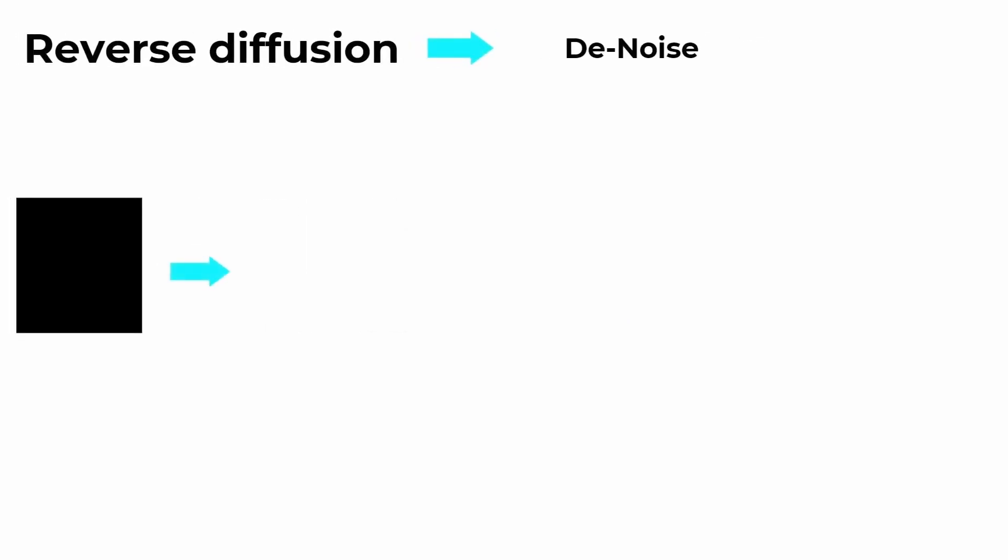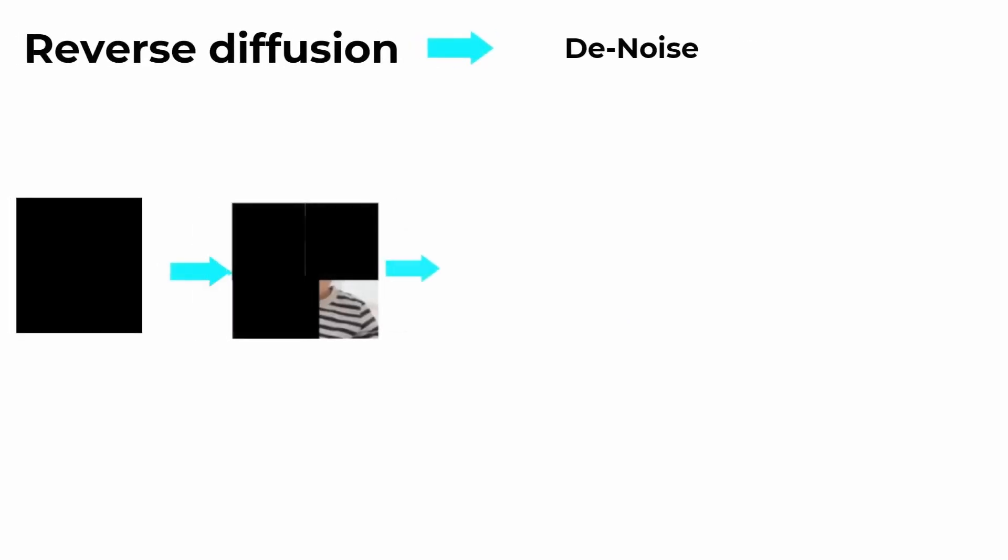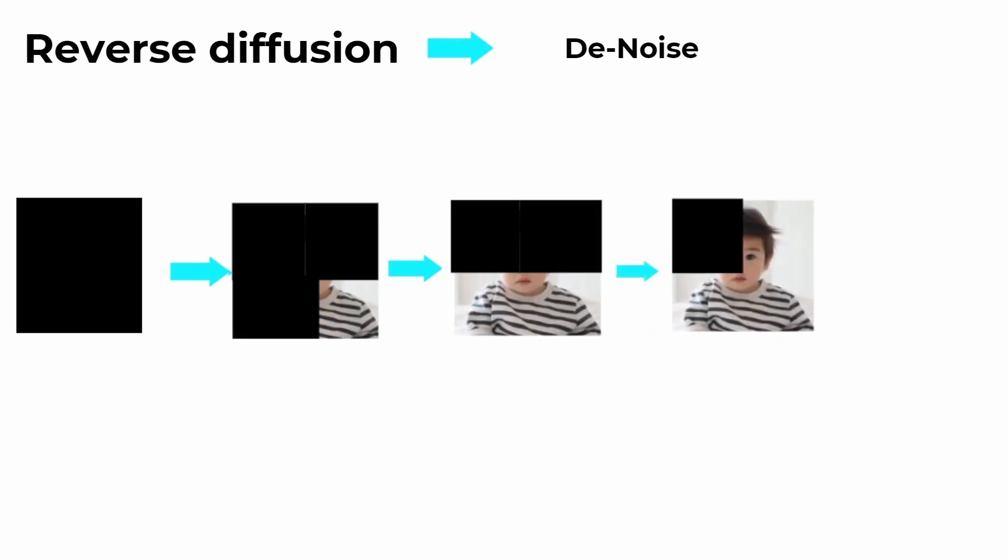In reverse diffusion, we reverse that process - we denoise one by one. The model learns the pattern of how the image is generated from noise. This pattern is learned, and the training parameters (weights and biases) are saved to create the final image from the noisy image. That's how diffusion models work: the two main features are forward diffusion and reverse diffusion.